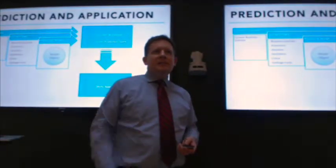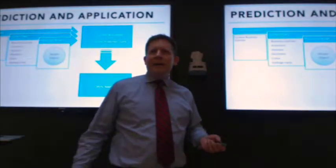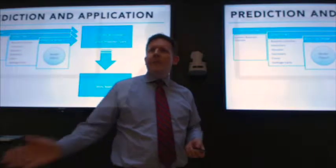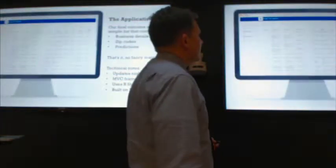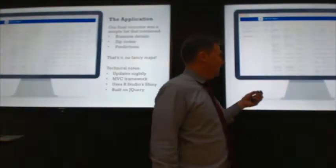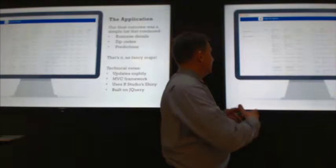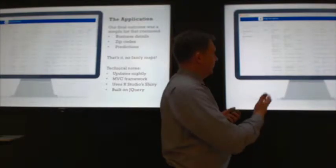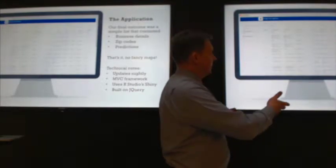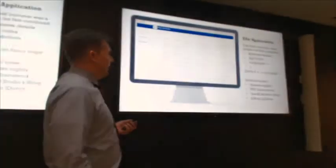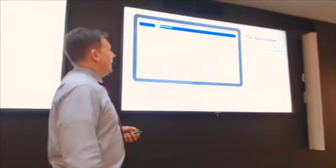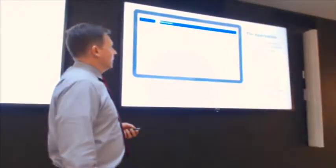That output gets dumped into a Shiny application. This is what our final result looks like — it's actually just a list of restaurants, a little bit of information about what they are, and a score.